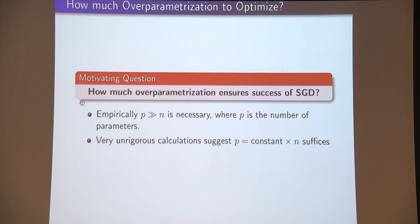So one of the motivating questions here is how much overparameterization can ensure the success of SGD for low training error and low test error? Empirically, roughly, you need parameters larger than your sample size to at least handle the training error. Perhaps some sketchy hand-waving calculations suggest at least p times constant times n suffices. These are not rigorous by any means.